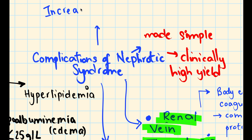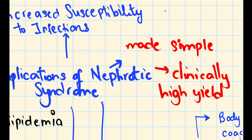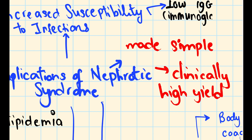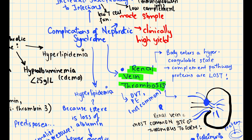Another complication of nephrotic syndrome is increased susceptibility to infections. It is common for someone with nephrotic syndrome to get a streptococcal infection, for example. This is primarily due to low serum IgG — you are not just losing albumin, you are losing immunoglobulins. You also have low complement and low T-cell function. These are very important to know.